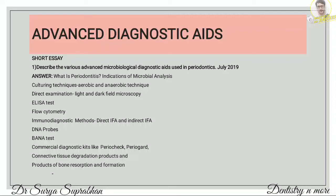Next is a short essay: describe the various advanced microbiological diagnostic aids used in periodontics. First define what is periodontitis, and then write the indications of microbial analysis — why we do microbial analysis. These are: initial diagnosis and treatment planning, to monitor treatment efficacy, to determine active sites of tissue destruction, to select appropriate recall interval, for prevention of periodontitis in persons at risk, and to identify antibiotic susceptibility of the infecting organism.